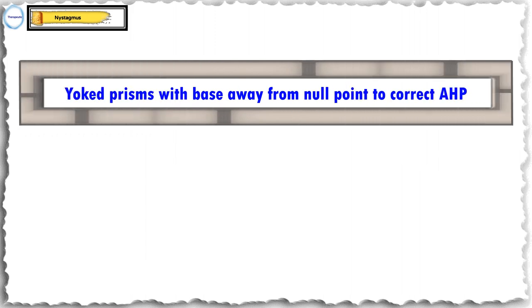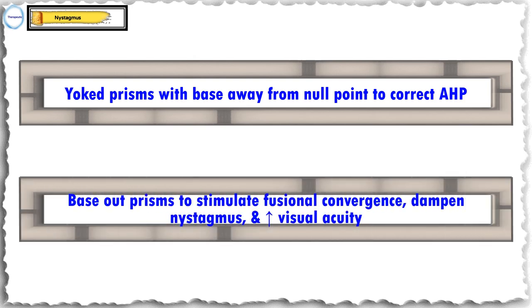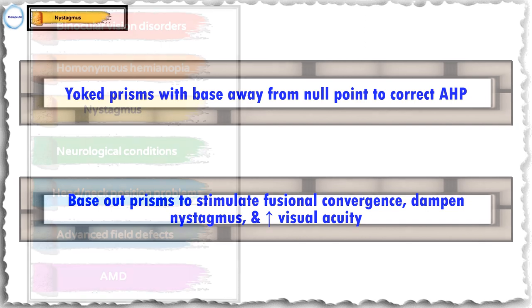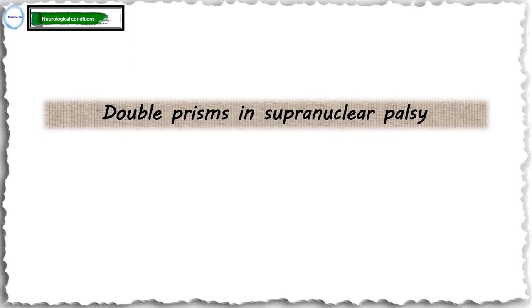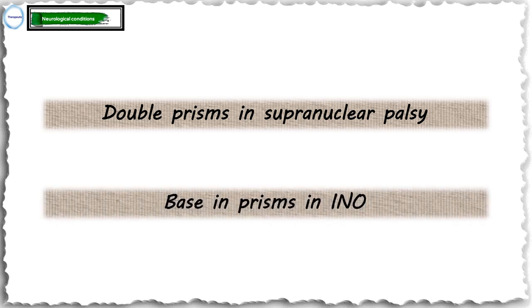In nystagmus, yoked prisms may be used with the base away from the null point or preferred direction of gaze to correct abnormal head posture. In some patients, nystagmus is suppressed when viewing a near target — base-out prisms stimulate fusional convergence, decrease the amplitude of nystagmus, and thus improve visual acuity. Coming to neurological conditions: double prisms may be used in supranuclear palsies to allow the person to change directions, and base-in prisms in internuclear ophthalmoplegia to correct exodeviation and reduce diplopia in primary gaze.